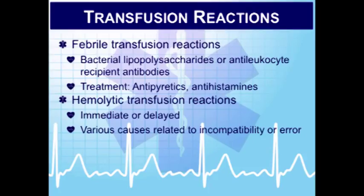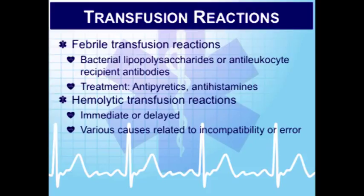Hemolytic transfusion reactions are caused by ABO or RH incompatibility, improper cross-matching, or improper blood storage. There are immediate and delayed types. Immediate reactions occur soon after transfusing incompatible RBCs — usually within minutes — as the RBCs are rapidly destroyed. Signs include abnormal bleeding from open sites, hypotension, shock, chest pain, facial flushing, shortness of breath, chills, fever, flank pain, renal failure, DIC, blood in the urine, and minimal urine output. Management includes supportive care, vasopressors, treat symptoms, diuretics to keep the kidneys working, and flushing the kidneys.